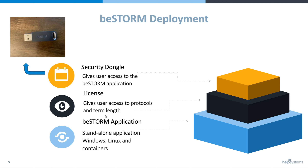The second part of BSTORM is the license file that gets sent. This is what gives you access to specific protocols and a term length. It has an expiration date for the product. The BSTORM application and the BSTORM license can be deployed on an unlimited amount of devices in your organization.